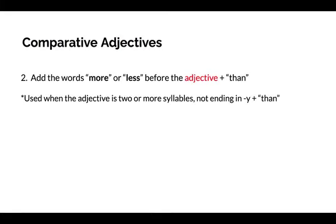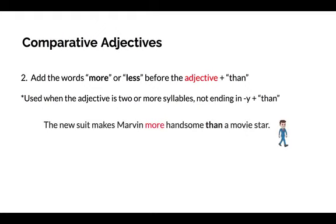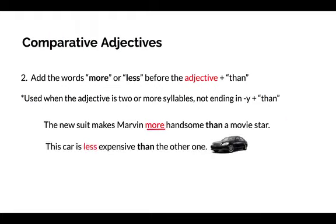The second way you can change an adjective into comparative form is to add the words more or less before the adjective and adding than. This is used when the adjective is two or more syllables not ending in Y, plus than. For example, the new suit makes Marvin more handsome than a movie star. The adjective handsome doesn't change form. Handsome is two syllables but does not end with a Y, so more is added before the adjective and than is after. This car is less expensive than the other one. Less is placed before the adjective expensive and is followed by the word than.